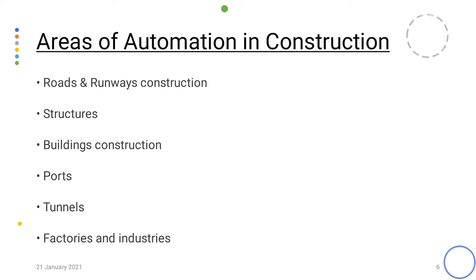Areas of automation in construction — these are the fields where we actually require automation: roads and runways construction, structures, building construction, ports construction, tunnels, factories and industries.